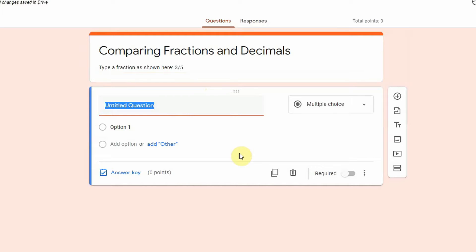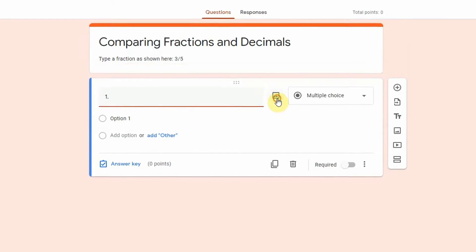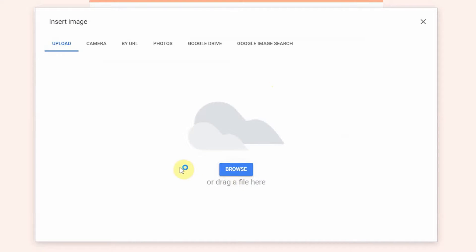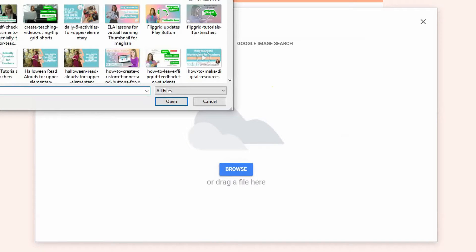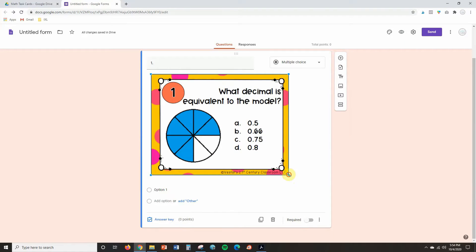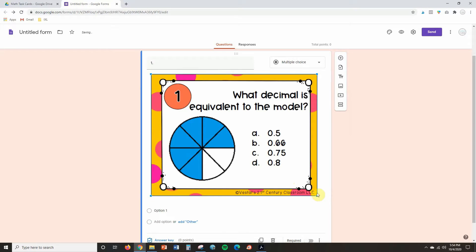Now we're gonna go ahead and start adding in our task cards. So what I usually do is where the untitled question is, I usually just put the task card number. And then you're going to click the image icon and I am going to find that image on my computer and I'm going to upload it.